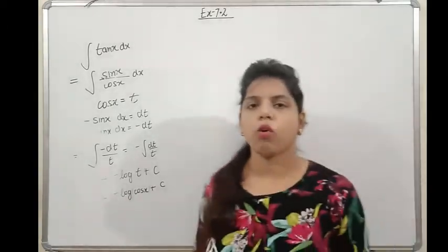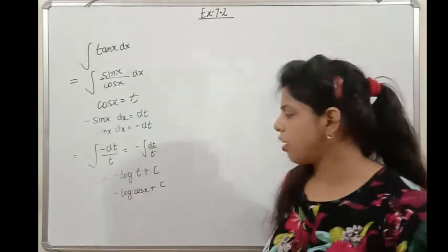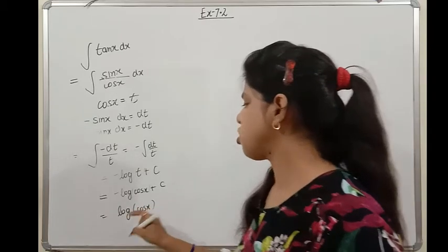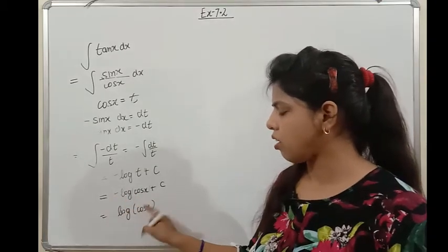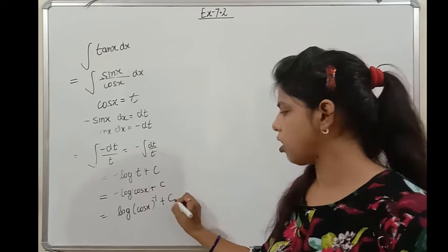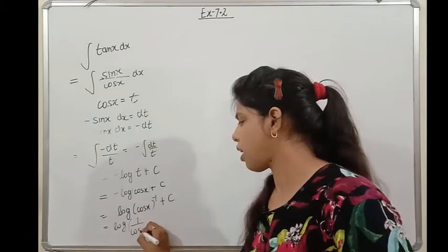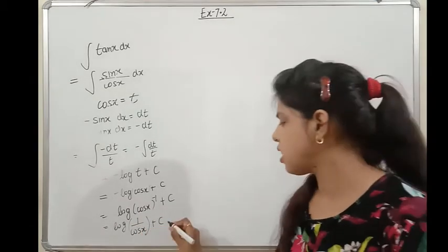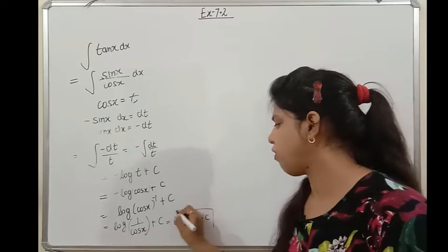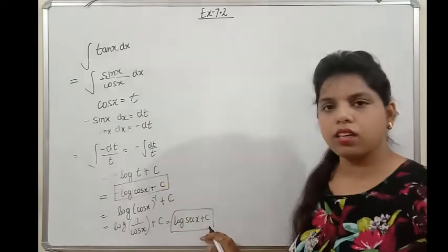So the integration of tan x is −log|cos x| + c. This can also be written differently: −log|cos x| = log|cos x|^(−1) = log|1/cos x| = log|sec x|. So both log|sec x| + c and −log|cos x| + c are correct formulas for the integration of tan x. Please note both down.